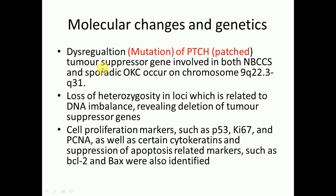Regarding molecular changes and genetics, dysregulation or mutation of the PTCH tumor suppressor gene is involved in both nevoid basal cell carcinoma syndrome and sporadic OKC, occurring on chromosome 9q22.3. Loss of heterozygosity at loci related to DNA imbalance reveals deletion of tumor suppressor genes. Cell proliferation markers such as p53, Ki-67, and PCNA, as well as certain cytokeratins and suppression of apoptosis-related markers such as BCL2 and BAX, were also identified.